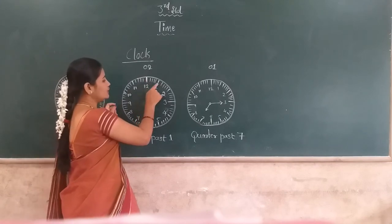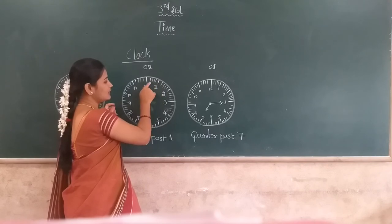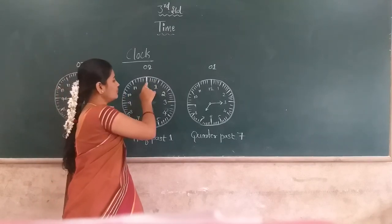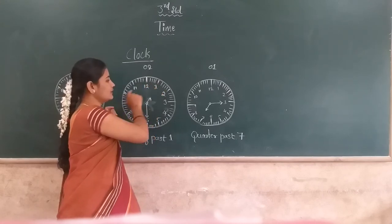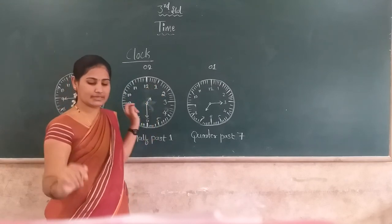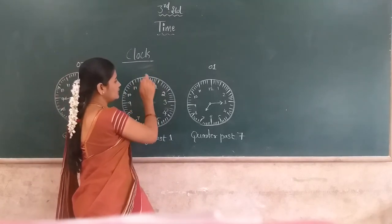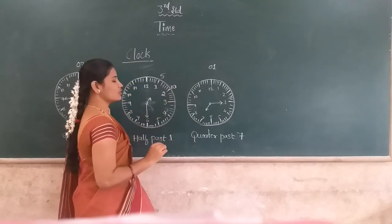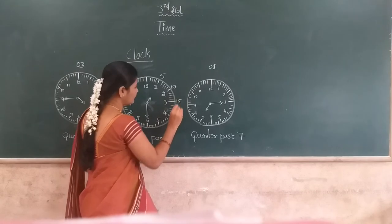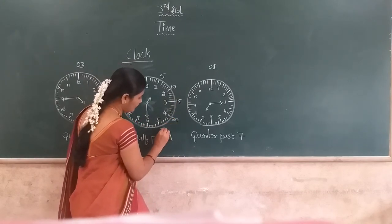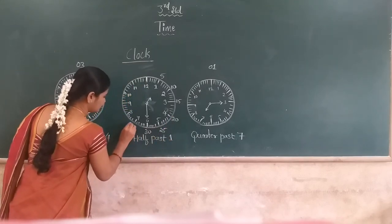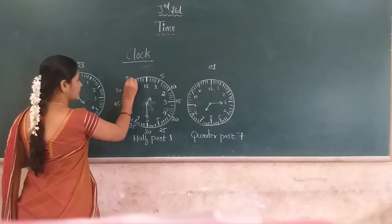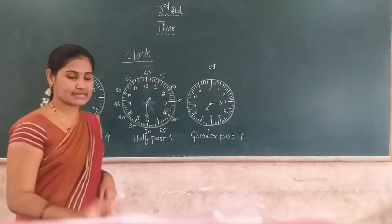From 12 to 1 there are 5 lines, so that is 5 minutes. From 12 to 2 is 10 minutes. From 12 to 3 is 15 minutes. Then 20 minutes, 25 minutes, 30 minutes, 35 minutes, 40 minutes, 45 minutes, 50 minutes, 55 minutes, and 60 minutes present in the clock.